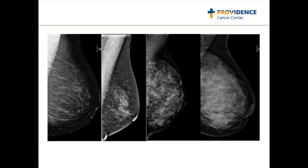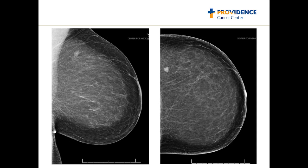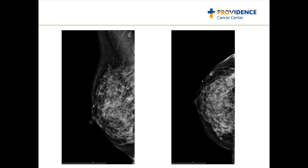Approximately half the female population has dense breast tissue. This is an example of a cancer in the left breast. In this fatty breast, the cancer is well visualized. This is a patient with dense breast tissue who presented with a lump. Her cancer is right in the middle of her breast, but even in retrospect cannot be seen on mammography.